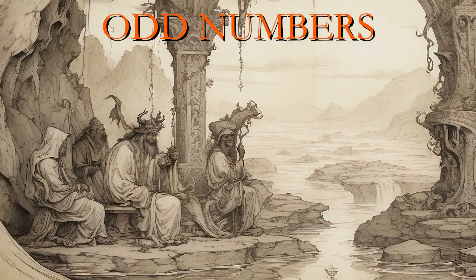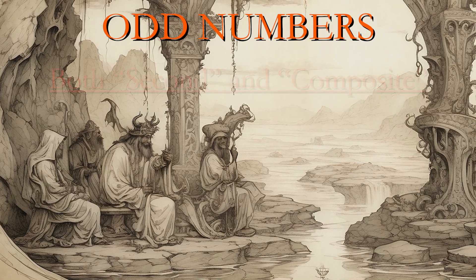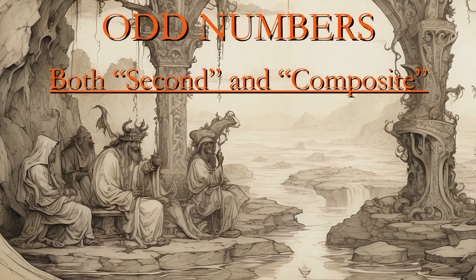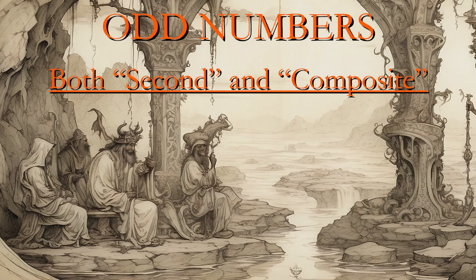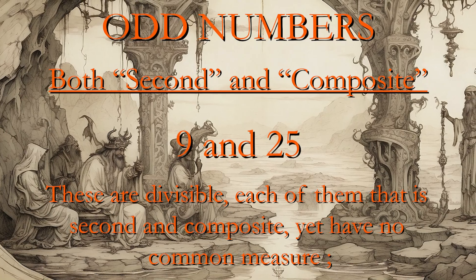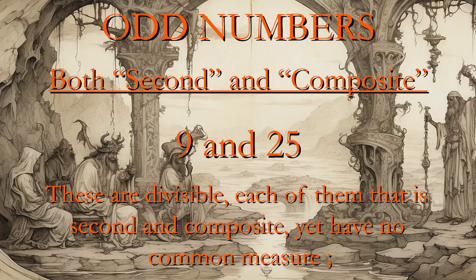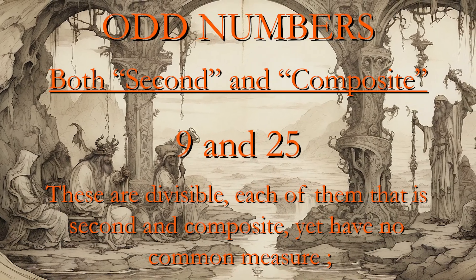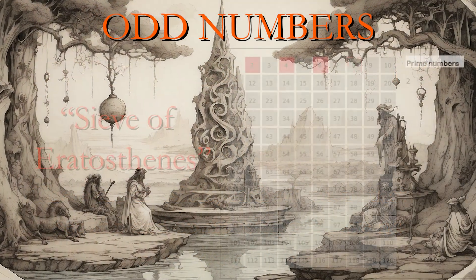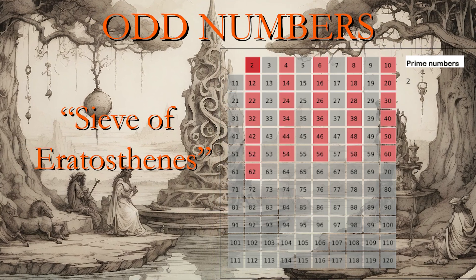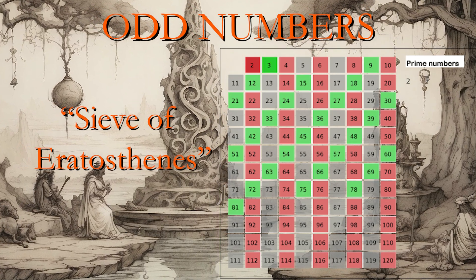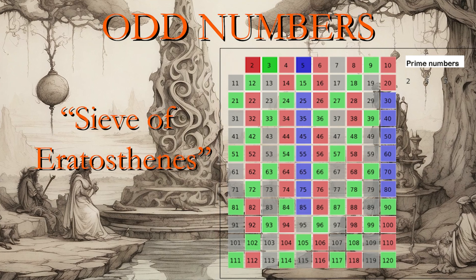The third variety of odd numbers is more complex, and is of itself second and composite, but with reference to another, is first and incomposite. Such are nine and twenty-five. These are divisible — each of them second and composite — yet have no common measure. Thus, three, which divides the nine, does not divide the twenty-five. Odd numbers are sorted out into these three classes by a device called the Sieve of Eratosthenes, which is of too complex a nature to form a part of this monograph, so discursive as it must be.